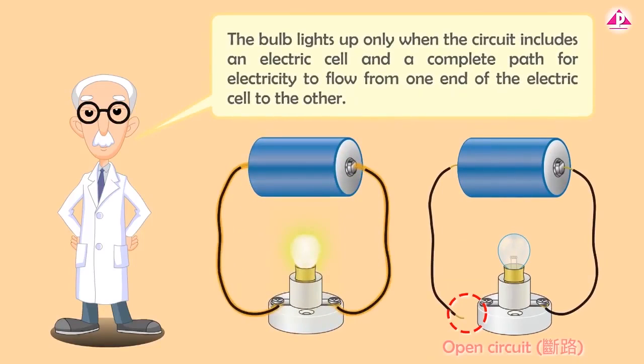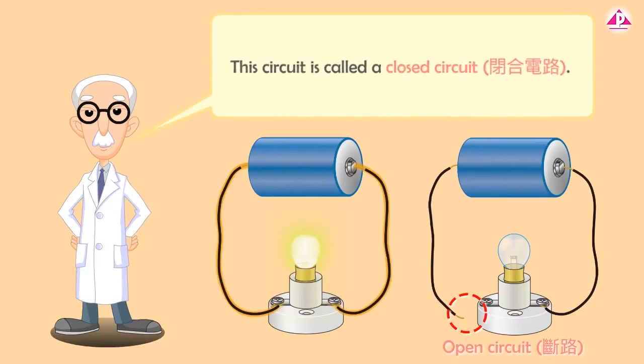The bulb lights up only when the circuit includes an electric cell and a complete path for electricity to flow from one end of the electric cell to the other. This circuit is called a closed circuit.